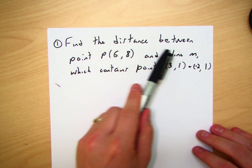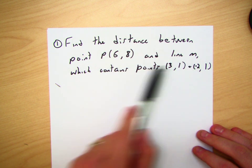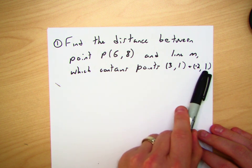find the distance between point P, which is the point (6, 8), and line M, and line M contains these two points, (3, 1) and (-2, 1).